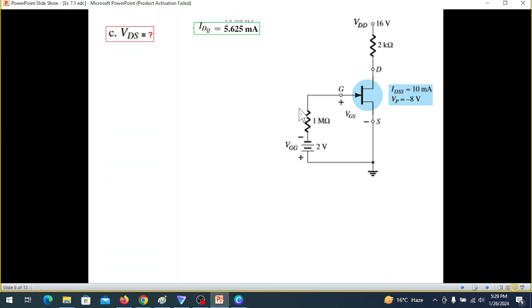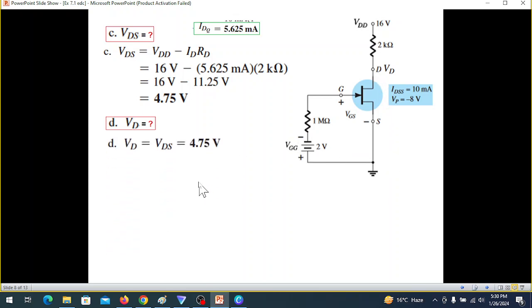Then we come to VDS, drain to source voltage. This voltage is nothing but VDD minus this voltage drop here. So VDS equals VDD minus ID times RD. VDD is 16 volts, ID is 5.625 milliampere, RD is 2 kilo-ohm. Solving we get 4.75 volts. Part D was VD, this voltage at drain. It is same as VDS because there is no other voltage drop here. So VD equals VDS equals 4.75.